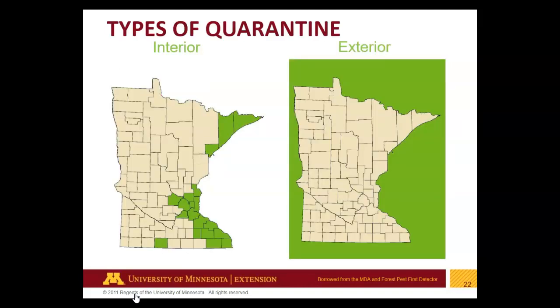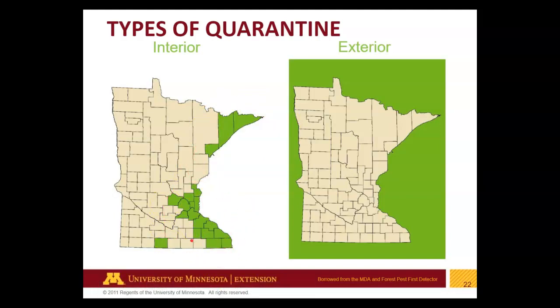There are two types of quarantines. An internal quarantine means a pest — like Emerald Ash Borer or Gypsy Moth — cannot leave quarantined counties without going through regulatory action. The fundamental idea is to limit movement out of those counties to prevent spread. Conversely, an external quarantine means we don't think we have it in Minnesota and don't want it. An example would be Thousand Cankers Disease on walnuts and mountain pine beetle. There are rules applying to anyone trying to bring materials that might harbor those pests into Minnesota.